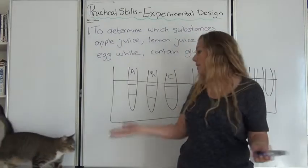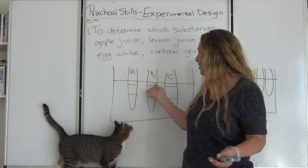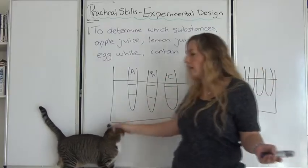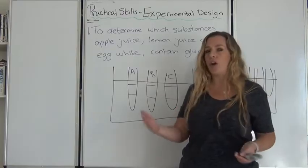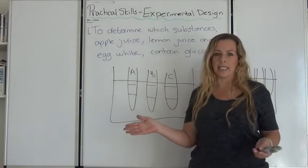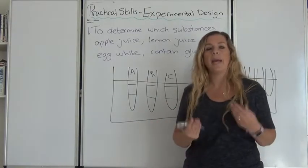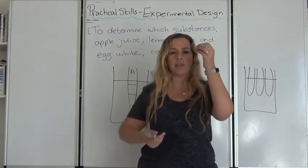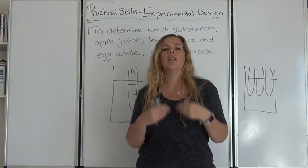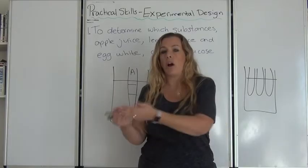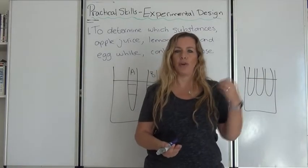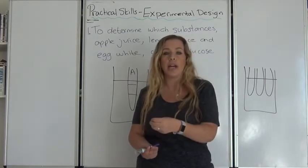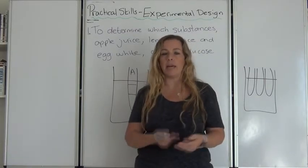And then you need to say what you're going to do with your results. So now you've got the results. This one changed color. That one didn't change color. This one didn't change color. So what are you going to do? You need to say, once you've got the results, put the results in a table and compare the color changes. You need to be able to say at the end of designing an experiment, what you're looking for? What results are you looking for? And what are you going to do with those results? So you're looking for a color change and you'll put those results in a table to compare.